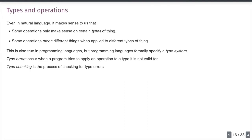Even in natural language, some operations only make sense on certain types of things, and other times operations mean different things when applied to different types. We also get situations where it's ambiguous what we mean. In programming languages we can't be ambiguous — it needs to mean something a computer can understand. So programming languages formally specify a type system, which means you can get type errors, and there's type checking to validate the type safety of a program.